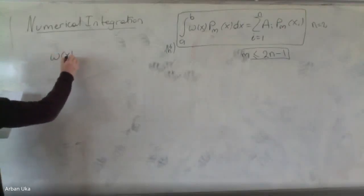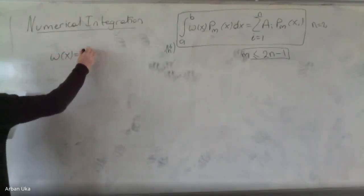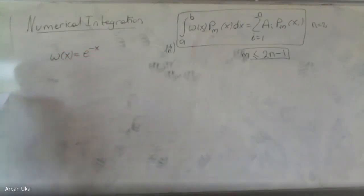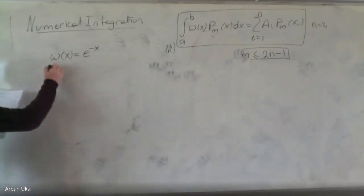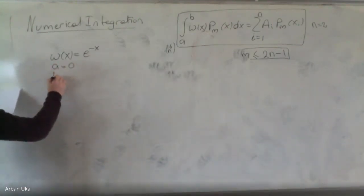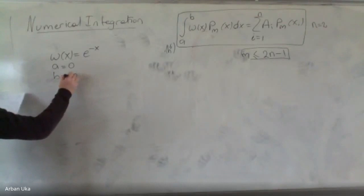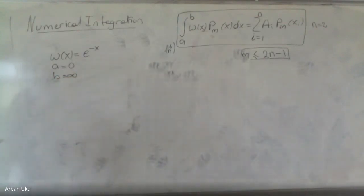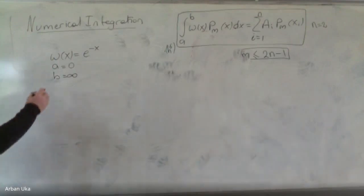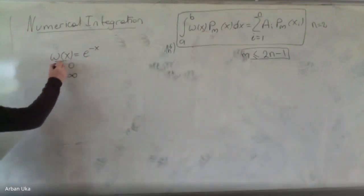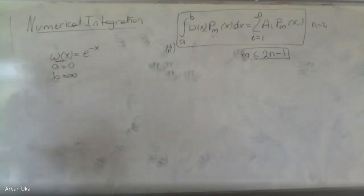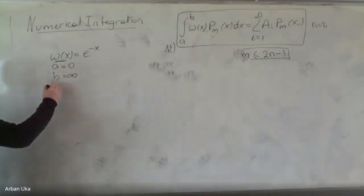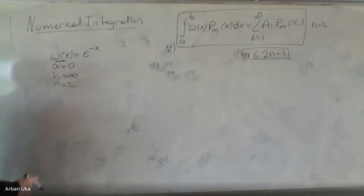We have a function which is e to the power minus x, and we want to integrate from a, which is equal to 0, to b, which is equal to infinity. We want to calculate the integral that involves this weight function, but we want to use only two terms. We want to have m equal to 2.